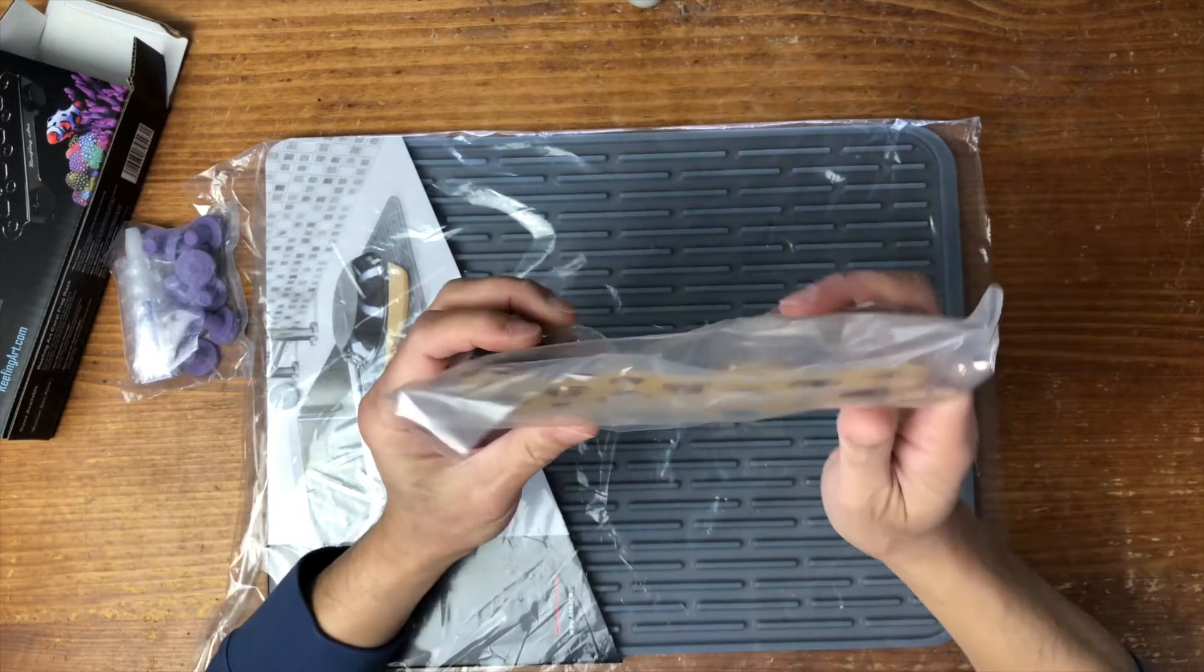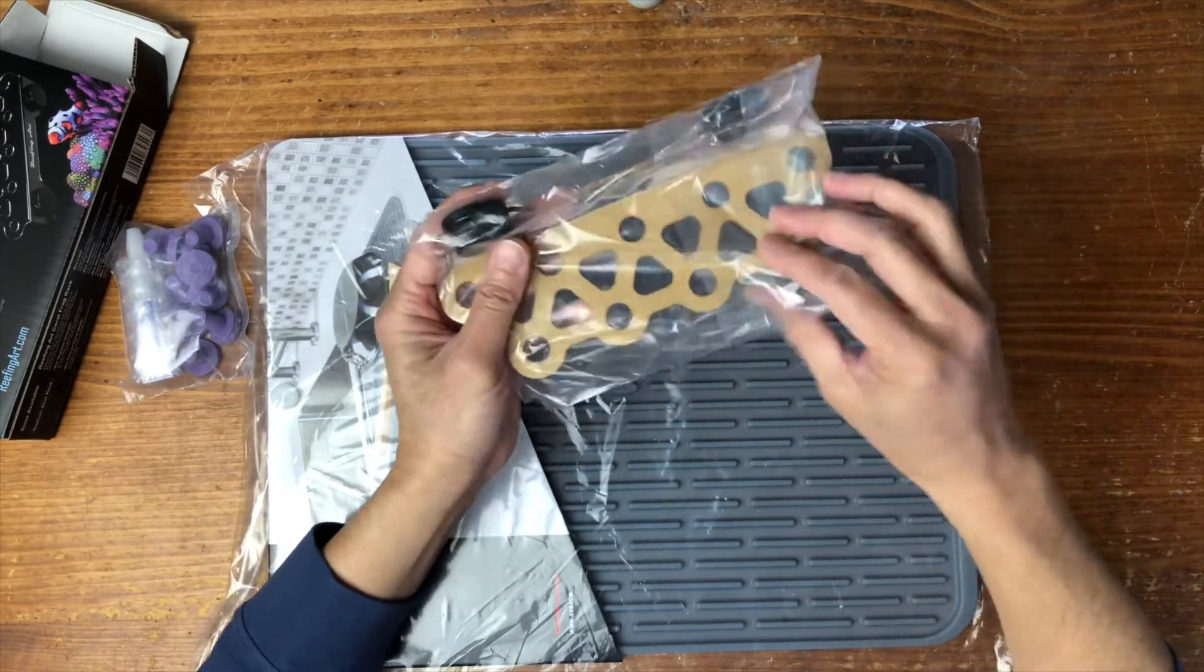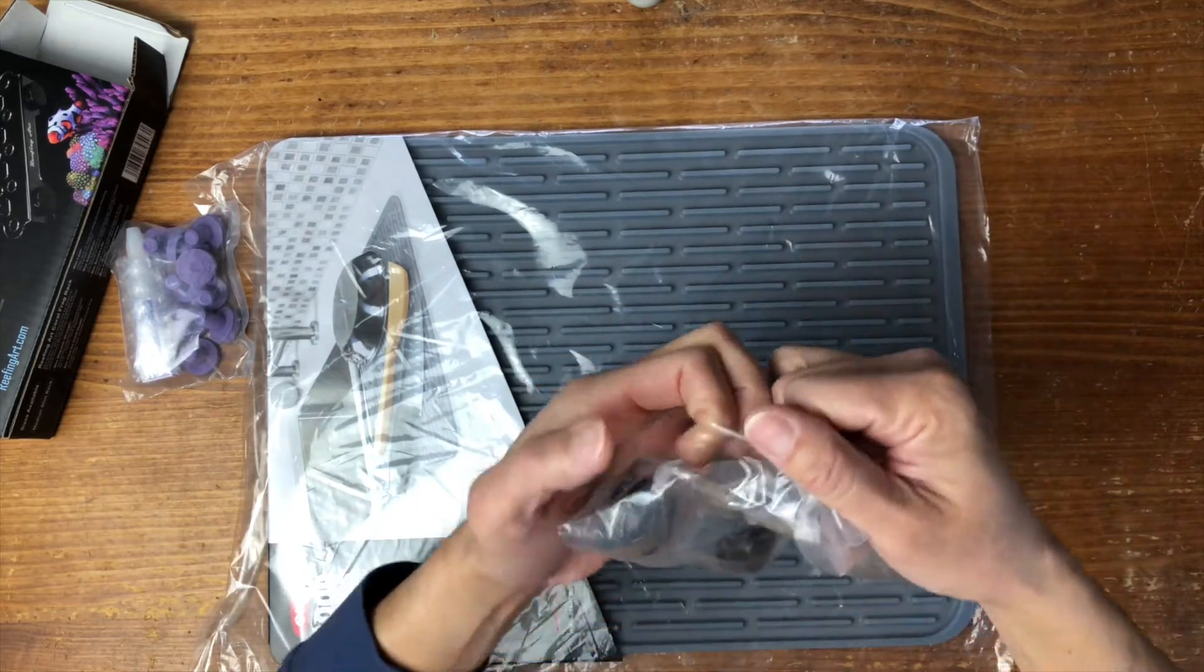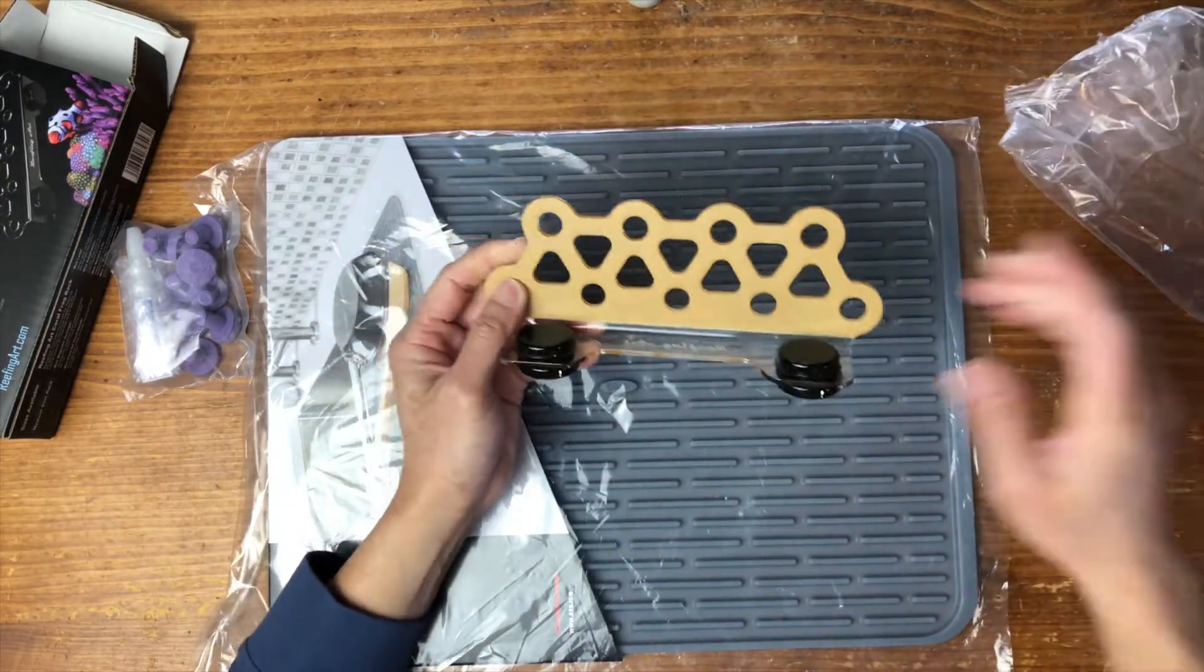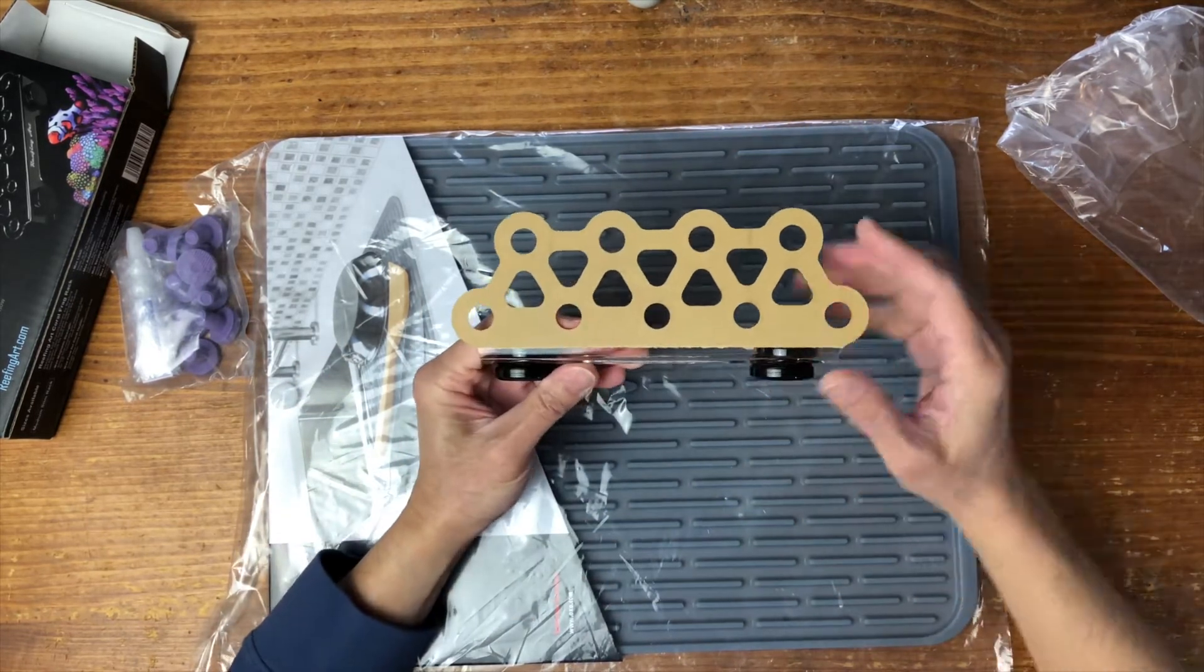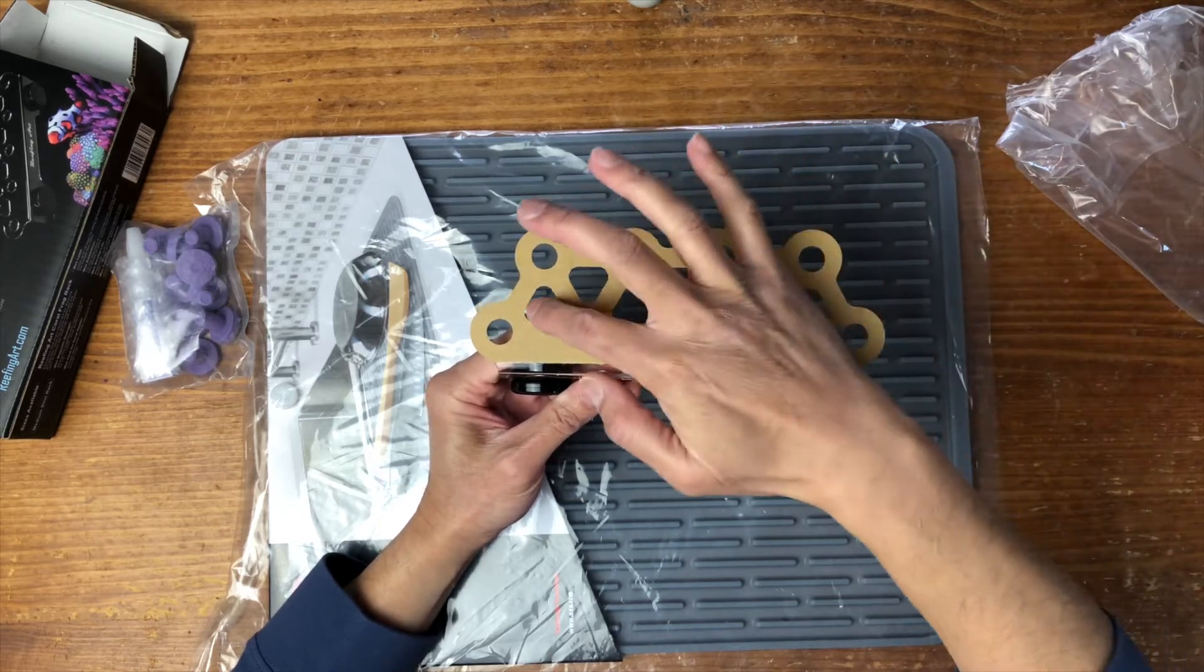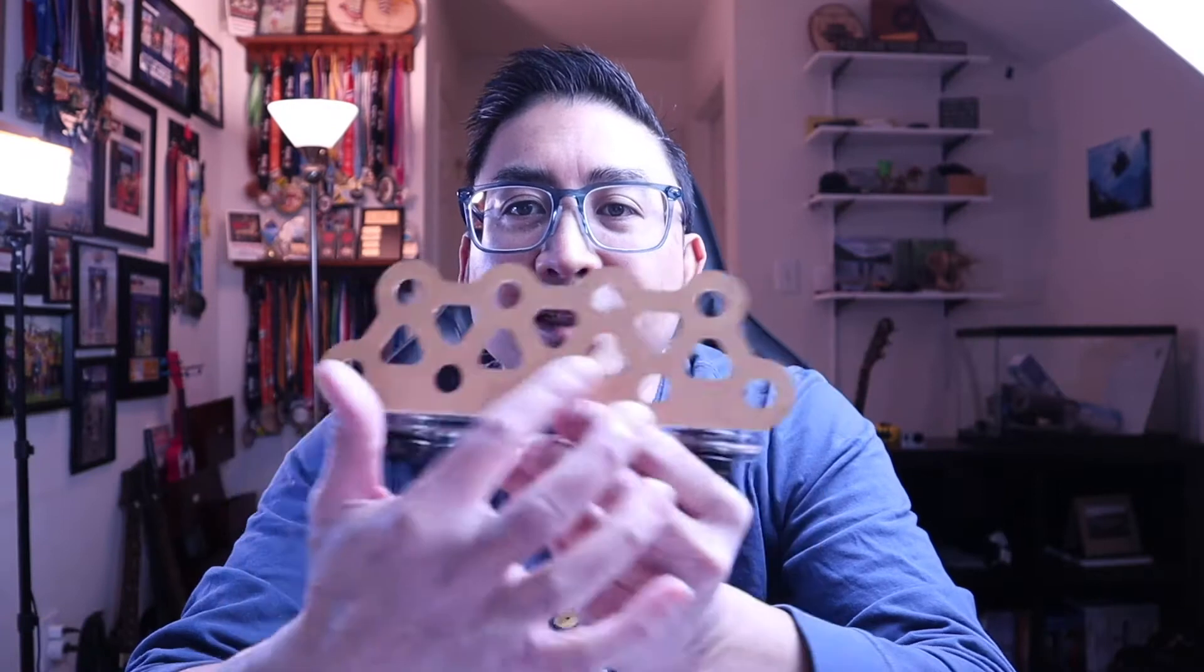So this is the Reefing Art. I think this is like medium or small size. I'm not sure exactly but I think it holds a good number of frags. So let's see, let's count them. One, two, three, four, five, six, seven, eight, nine, ten, eleven, twelve, thirteen, fourteen, fifteen, sixteen. So it can hold sixteen frags.